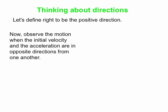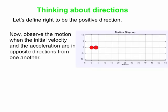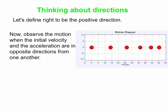Now we'll look at what happens when the velocity and the acceleration are in opposite directions from one another. Here we have the object moving to the right initially, so the velocity is in the positive direction, but the acceleration is in the negative direction, to the left. That means the object is slowing down — the dots are getting closer together as time goes by. In that first case, V was positive and A was negative.